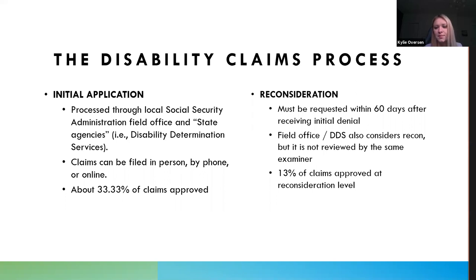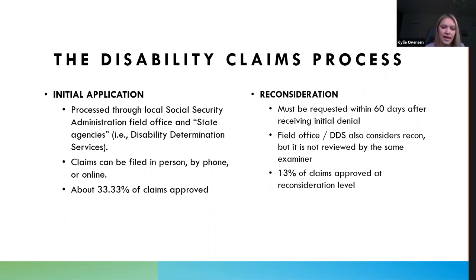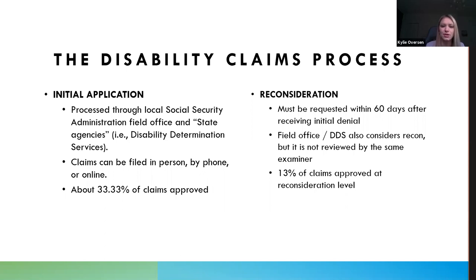Once you get that first denial, you apply for what is called reconsideration — that's just another paper application. You submit the request for reconsideration to the same office; these are state agencies working through the Department of Human Services applying Social Security Administration rules. About 13% of claims are approved at the reconsideration level, so we're still under the 50% mark of claims being approved before you get to a hearing. The reconsideration is also a phase many people go through on their own; you're just submitting a request and there's no legal argument at that phase.